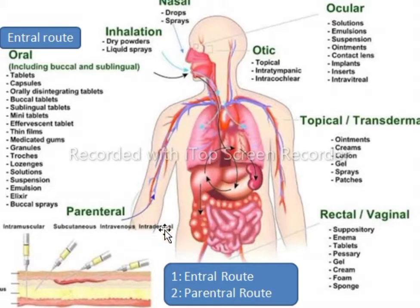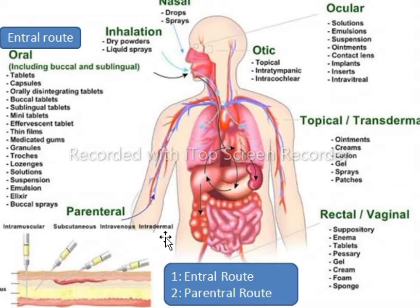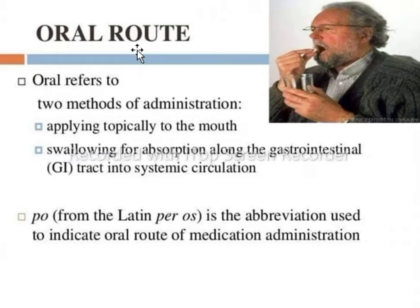Examples of parenteral routes include inhalation, nasal, otic, ocular, topical or transdermal, rectal, and vaginal routes. It also includes intramuscular, subcutaneous, intravenous, and intradermal routes for drug administration.